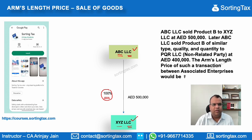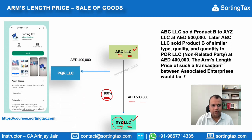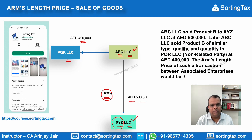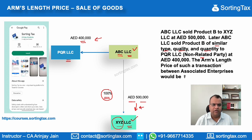ABC LLC sold certain goods for AED 500,000 to XYZ LLC, and it also sold similar goods — of similar type, similar quality, and similar quantity — to PQR LLC, which is a non-related party, at a price of AED 400,000. It is very obvious that the price at which the goods were sold to the unrelated party and the price at which they were sold to the related party are different — the price to the related party is higher.